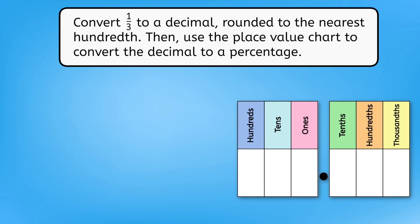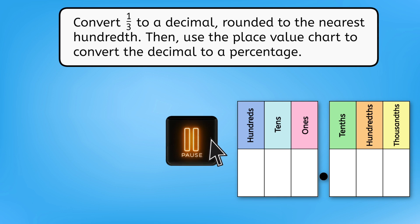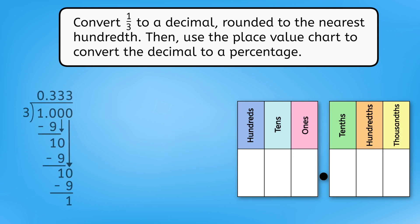Pause here to convert one-third to a decimal rounded to the nearest hundredth. Then use the place value chart to rewrite the decimal as a percentage. One-third converted to a decimal is 0.333 repeating, which, rounded to the hundredth place, is 33 hundredths.